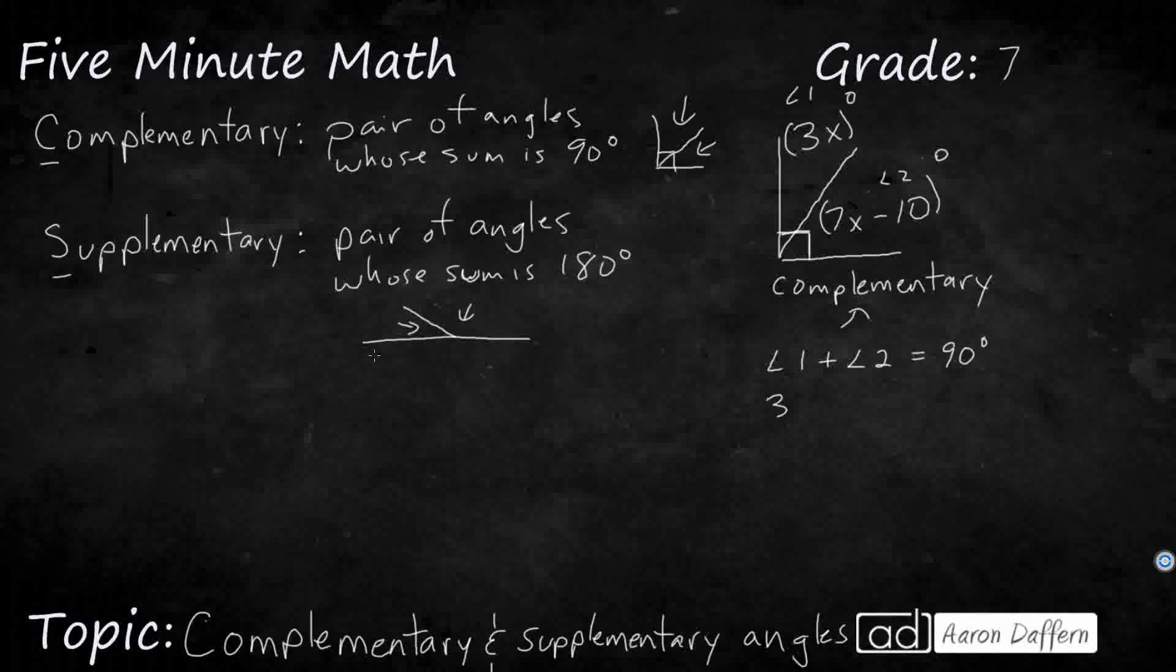But what is angle one? Angle one is 3x. What is angle two? I'll put that in parentheses, 7x minus 10. So I can use substitution. And now we can remove those parentheses. They're not really doing anything for us because all of the operations are addition or subtraction.